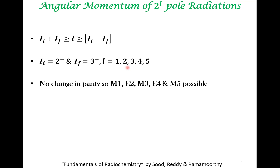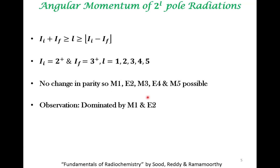Using the parity information for electric and magnetic multipole radiation, and noting that in this 2+ to 3+ example there is no change in parity, the allowed multipole radiations are M1, E2, M3, E4, and M5. These are the ones that do not produce a change in parity. Experimentally, the radiation is dominated by M1 and E2 radiation.